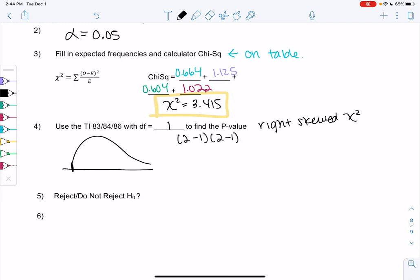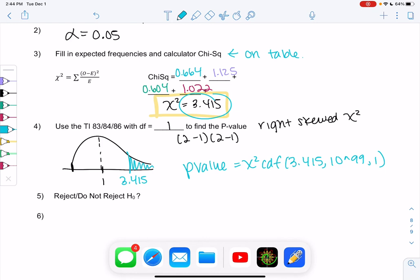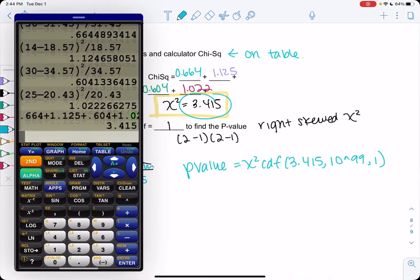So our peak is around 1, and we're going to shade past 3.415, wherever that is. Just approximate. So our p-value is chi-square CDF. Lower is 3.415, up to infinity. So right-tailed test. And degrees of freedom is 1. Let's see what we get.